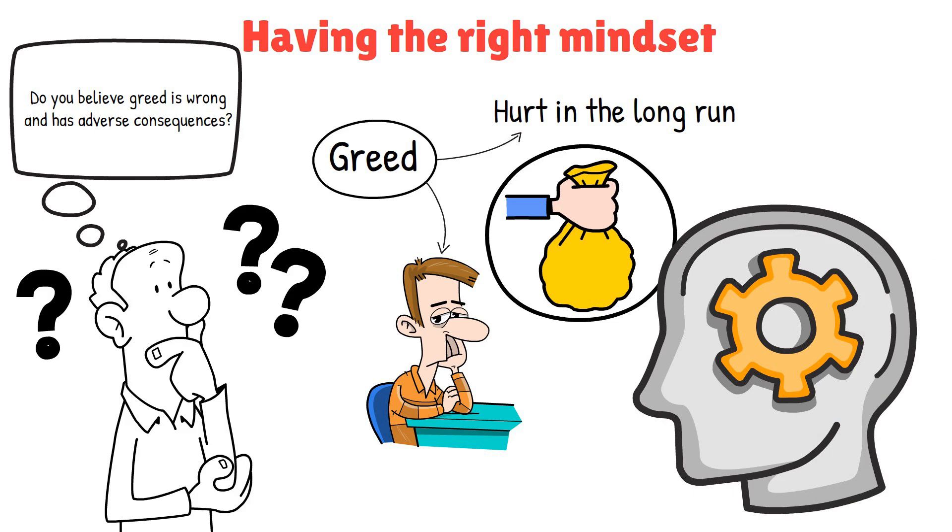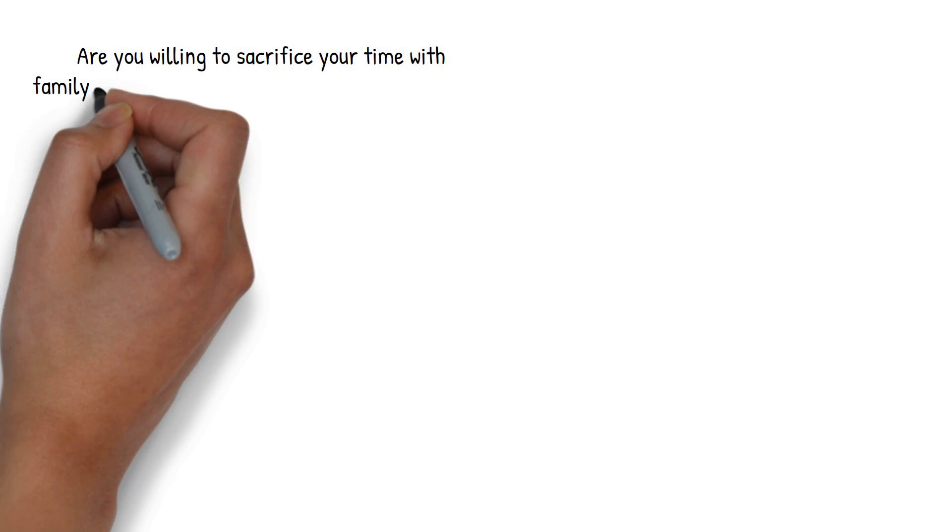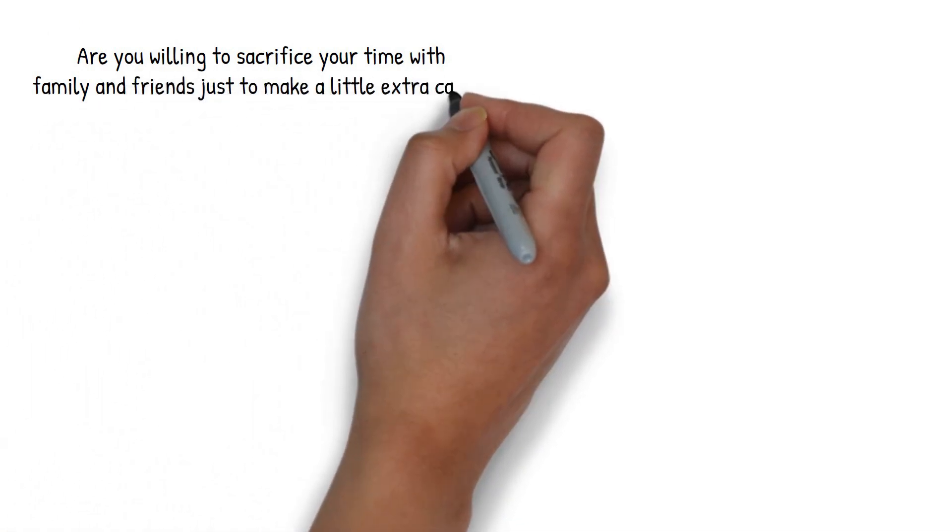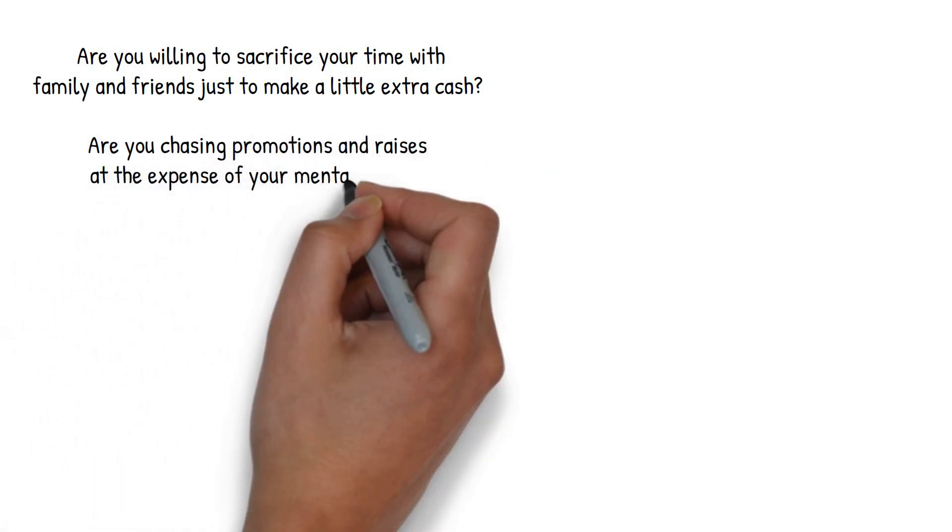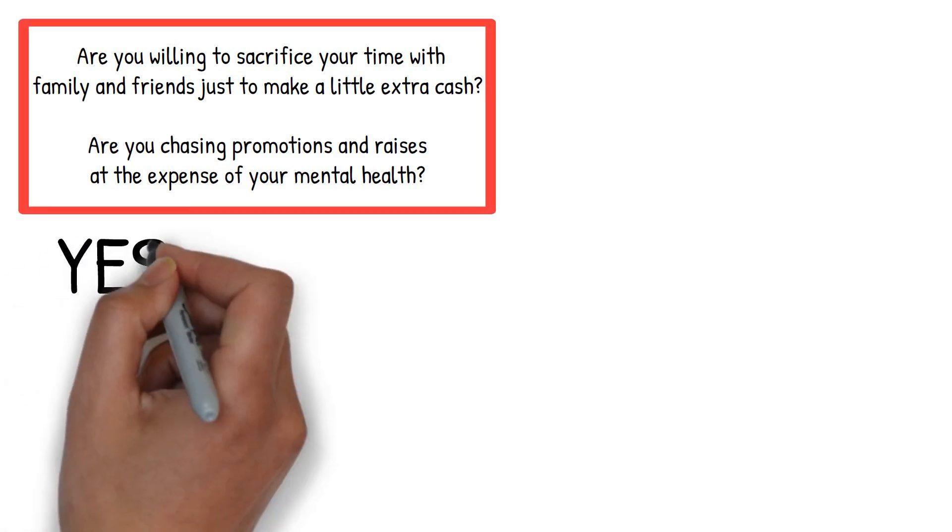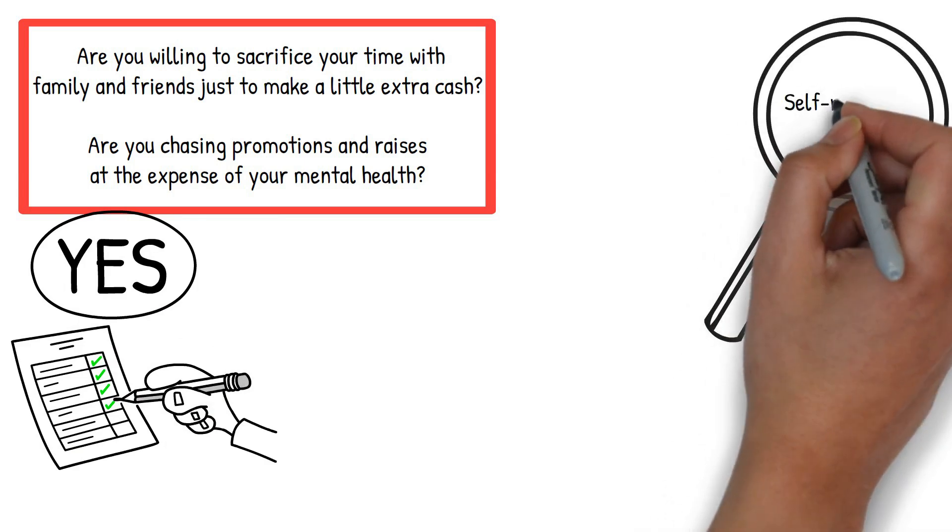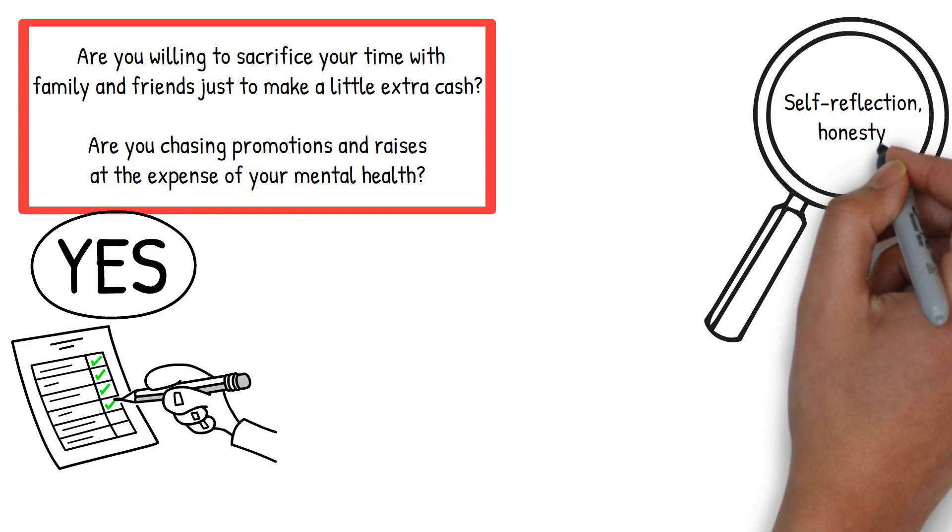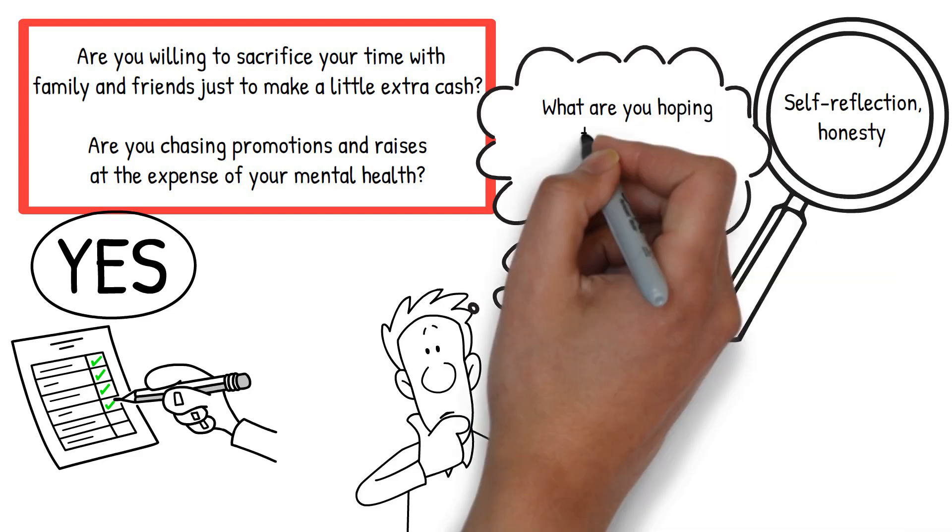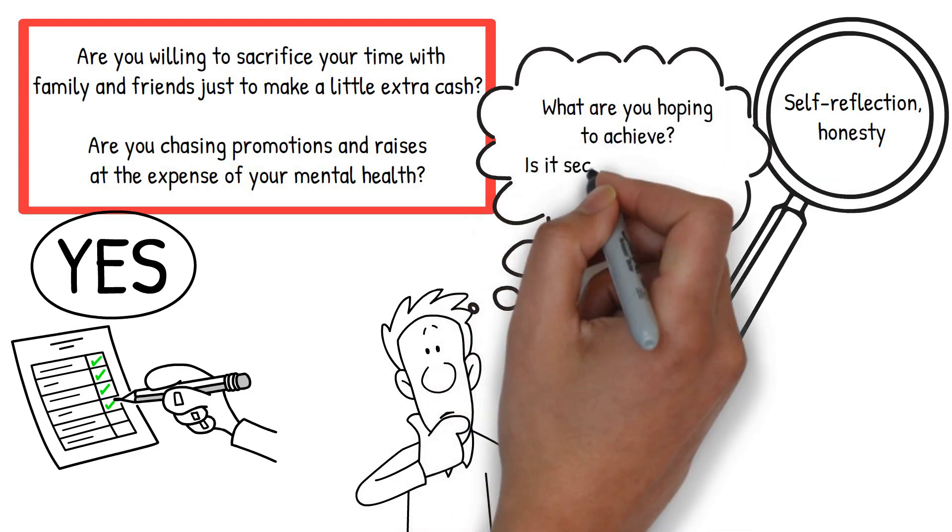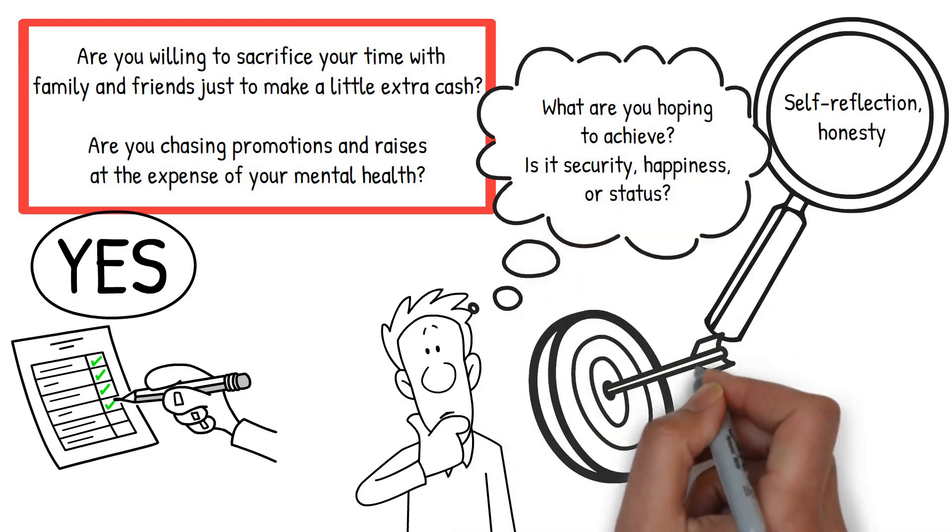Having the right mindset means knowing that there are lengths you shouldn't go for money. It means setting boundaries for yourself and recognizing when your desire for more is becoming unhealthy. For example, are you willing to sacrifice your time with family and friends just to make a little extra cash? Are you chasing promotions and raises at the expense of your mental health? If you find yourself saying yes to these questions, it might be time to reevaluate your priorities. Changing your mindset isn't something that happens overnight. It's a process that involves self-reflection and honesty. Start by being aware of your thoughts and feelings about money. When you find yourself obsessing over getting more, take a step back and ask yourself why. What are you hoping to achieve? Is it security, happiness, or status? Once you understand your motivations, you can start to shift your focus towards healthier goals.